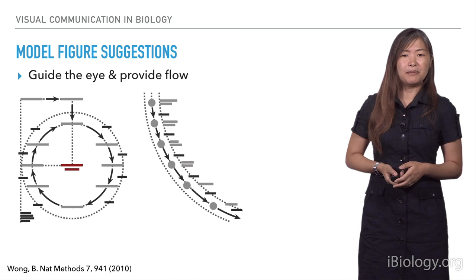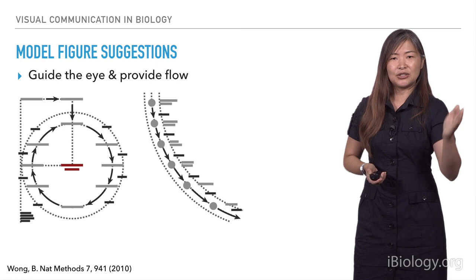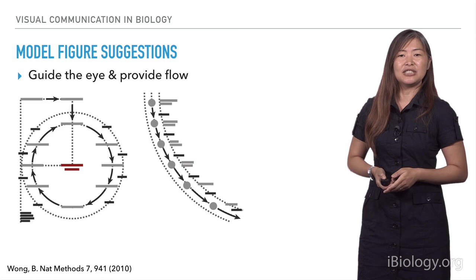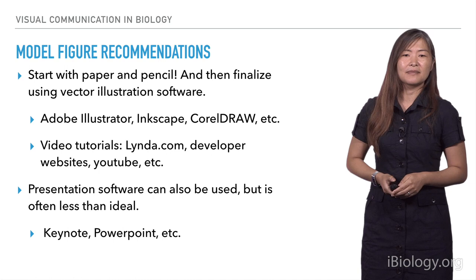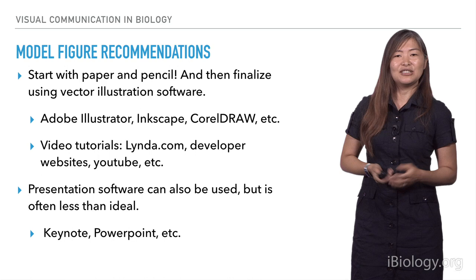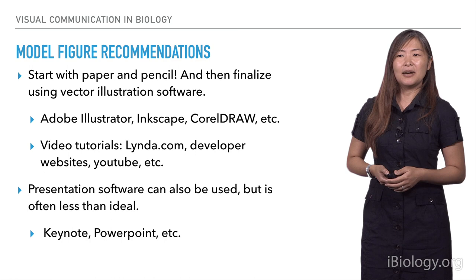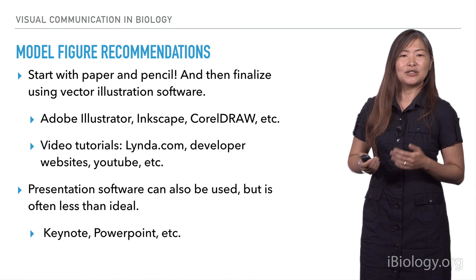Another way to provide better flow is by thinking about where you place text. Aligning your text to the way your diagram flows can help people's eyes follow things in the right direction. That's also something to change if the placement of your text might be disrupting the flow. To recap the most important points for model figures: start with paper and pencil, draw, show them to other people especially in your target audience, get their feedback, and reiterate before going into Illustrator or whatever vector drawing program you use.